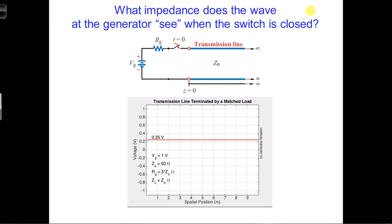To determine the initial amplitude of the wave, we need to know what the battery sees when the switch is closed. Specifically, what we're asking is what impedance does the battery see?